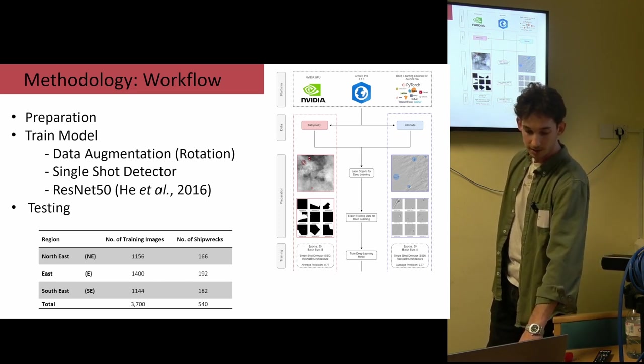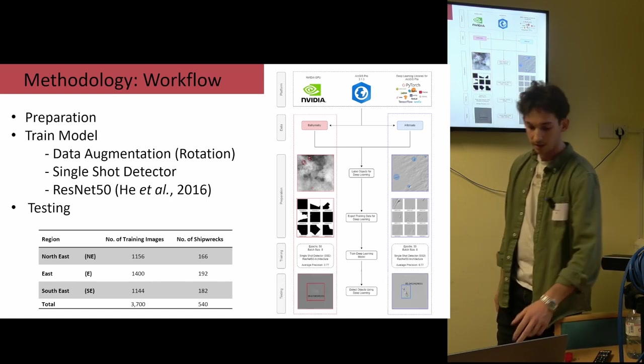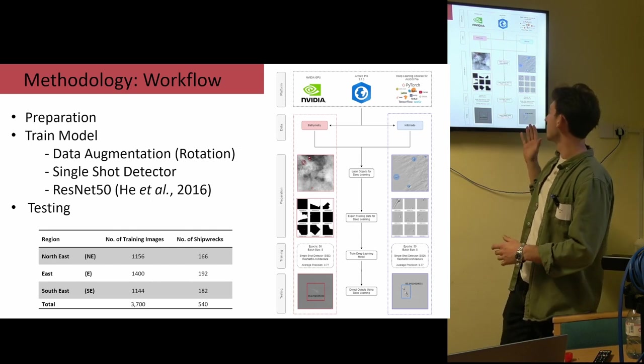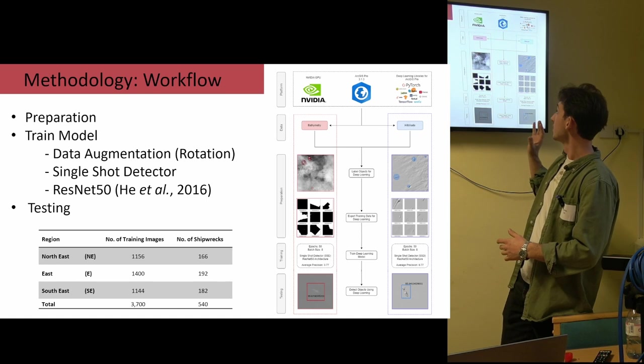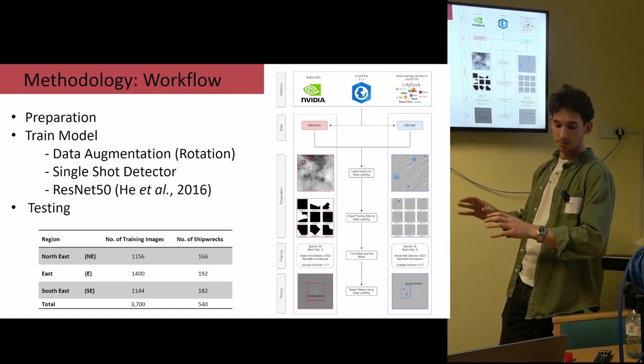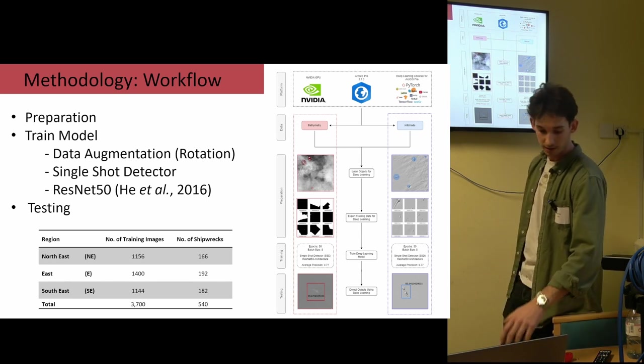So once the model was trained, I was then able to move on to the final testing in the south region. And that looks something like this. We will hopefully look a bit closer at the back there if you can't see this. These are just results from the bathymetry and the hillshade running in parallel, so I could compare them directly. The number in the box is its confidence score, again, of how accurate it thinks it is.